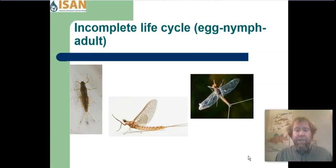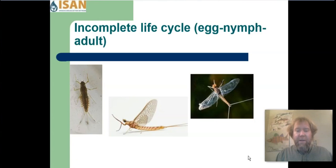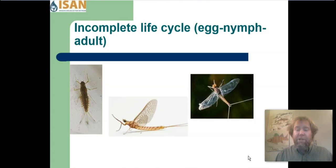These pictures show the incomplete life cycle of a mayfly. The picture on the far left is the mayfly nymph. The mayfly nymph will mature and then turn into an adult, which is the middle picture. But the adult stage of the mayfly has two different parts — the dun stage, and then the picture on the far right is called the spinner, which is the mature insect that can reproduce.